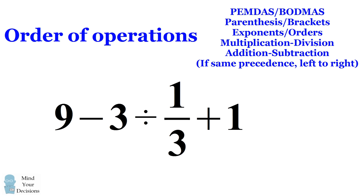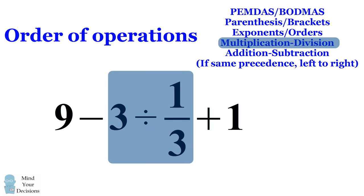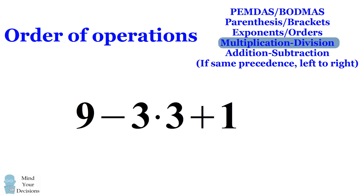We have no parentheses or brackets in this expression. We also have no exponents or orders. We do have a division here which is 3 divided by one-third. So let's evaluate this first. 3 divided by one-third is the same thing as 3 multiplied by the reciprocal of one-third which is 3.